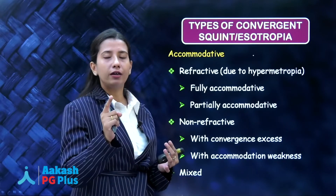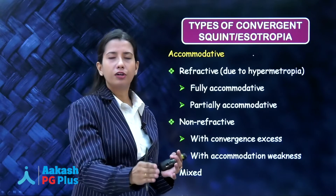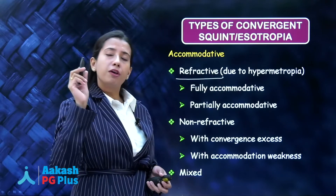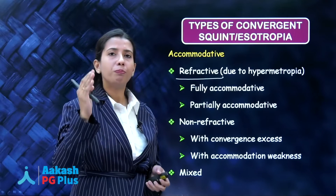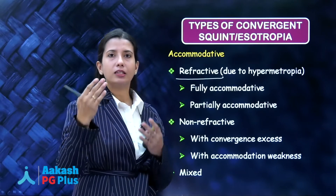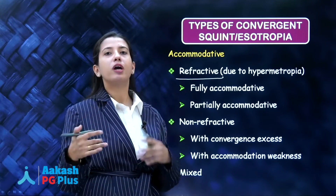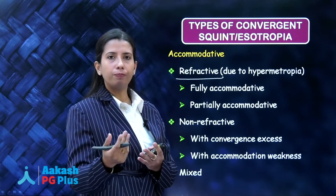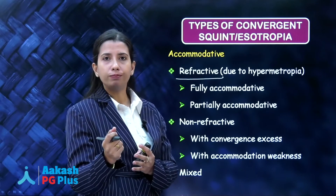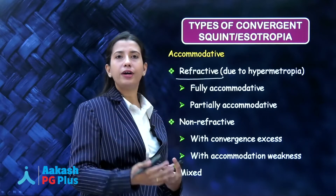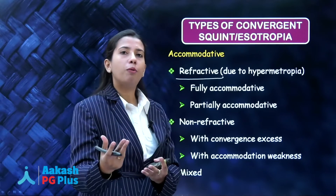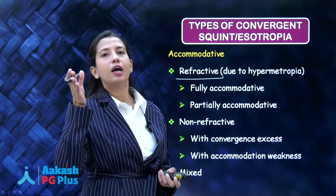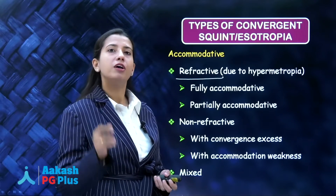Whenever you are accommodating, you are not only accommodating — you are also converging. In refractive accommodative esotropia, if a patient is a hypermetrope, they need a plus lens and more convergence. When they are trying to accommodate for any object at distance or near, they have to put in more effort because they are already hypermetropic. So they will accommodate more, converge more, the eye will move inside, and you will have esotropia.